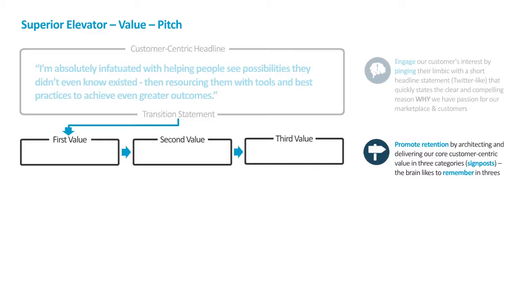Just before we share the three signposts, we should let them know it's coming in threes. Allow me to demonstrate. 'I am absolutely infatuated with helping people see possibilities they didn't even know existed, and resourcing them with the tools and best practices to achieve even greater outcomes. At CCI, we achieve the following with a three-step approach: number one, relevant training; number two, attendee engagement; and number three, solution adoption.'